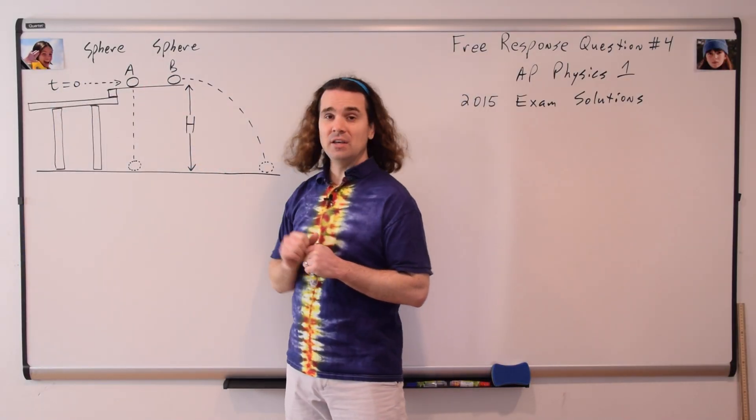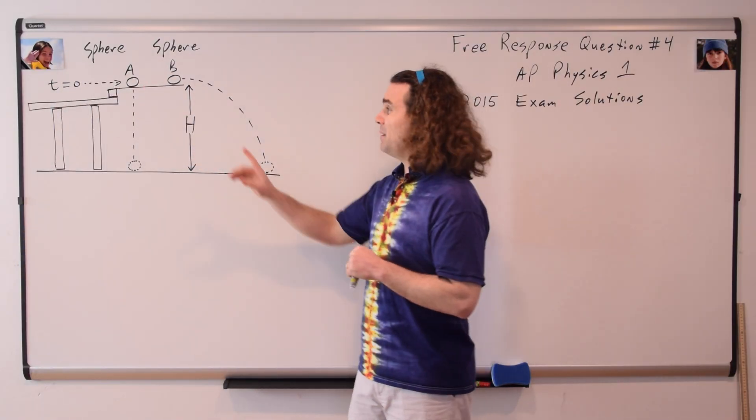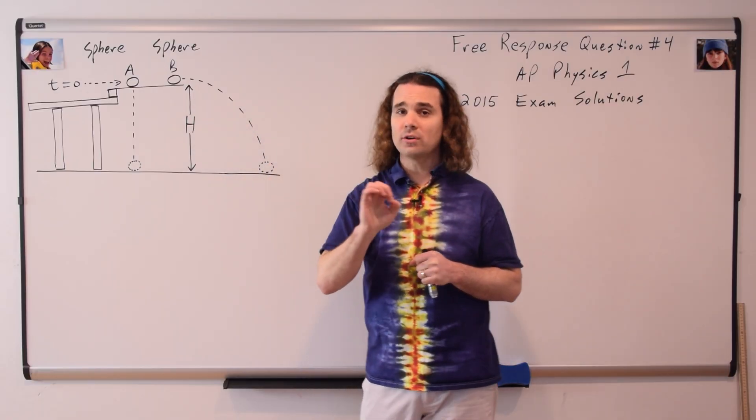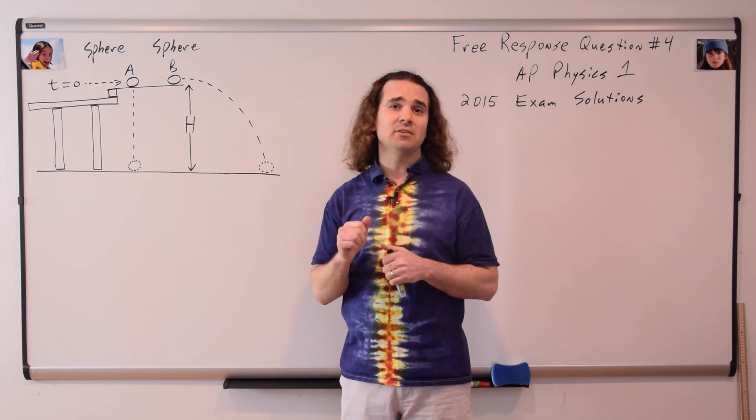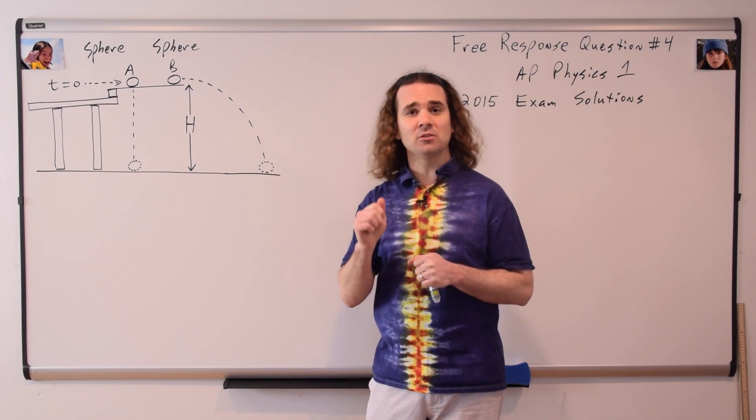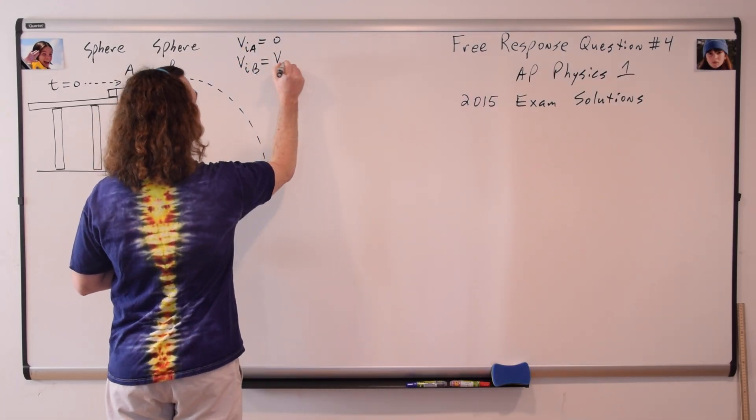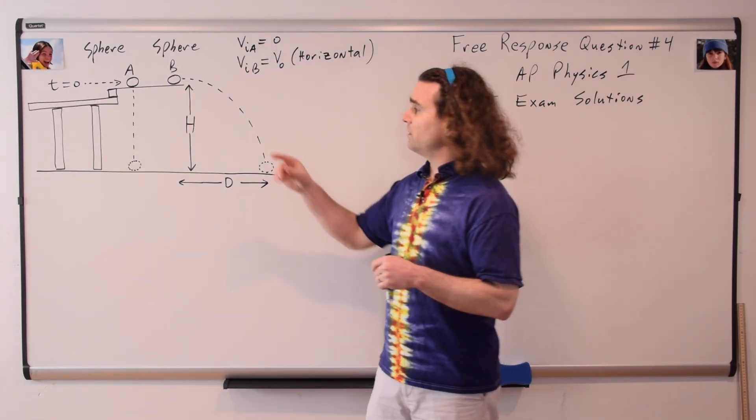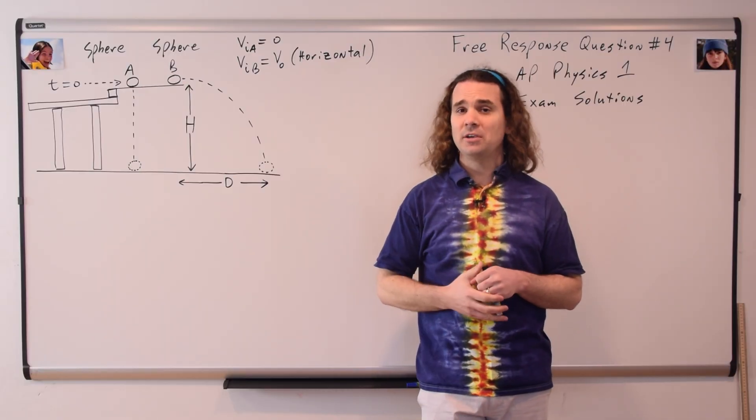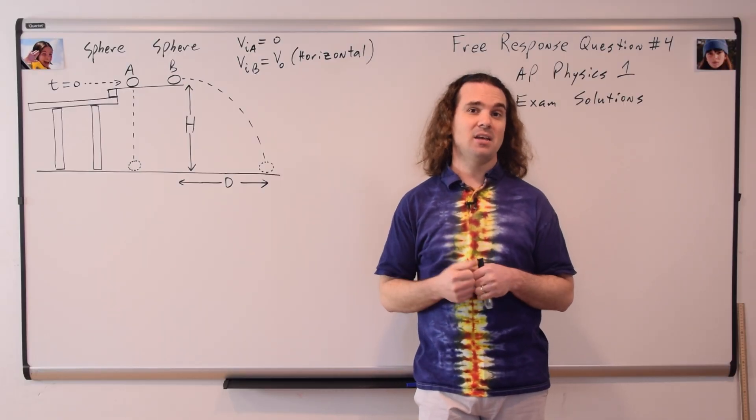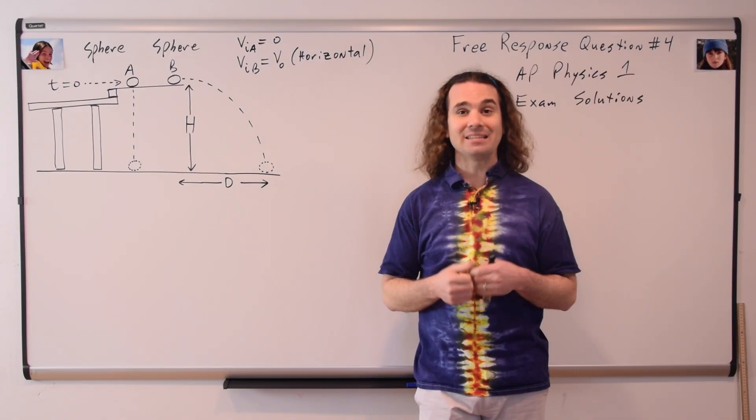Sphere A has no initial velocity, and sphere B is given an initial horizontal velocity with a magnitude v-naught. Sphere B travels a horizontal distance, capital D, before it reaches the ground. Even though sphere B has to go farther before landing on the ground, both spheres reach the ground at the same time. Air resistance is negligible.